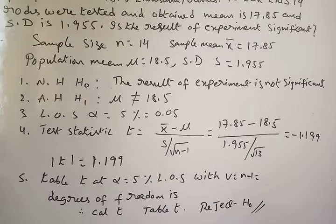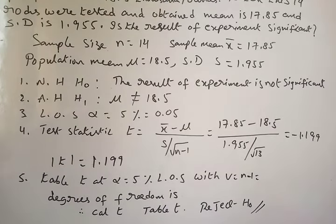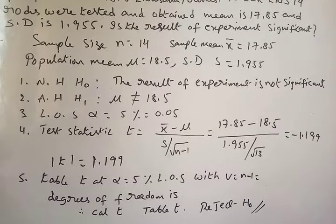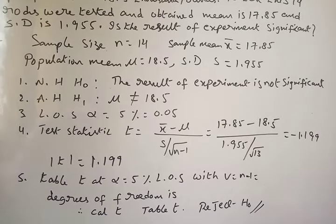The process is the same for Unit 4 and Unit 5 — five steps must be written: null hypothesis, alternative hypothesis, level of significance, test statistic, and conclusion. The key difference is whether it is large sample (n > 30, use z) or small sample (n < 30, use t), and whether it is single mean, two means, single proportion, or two proportions. In large samples we don't use degrees of freedom; in small samples we do.